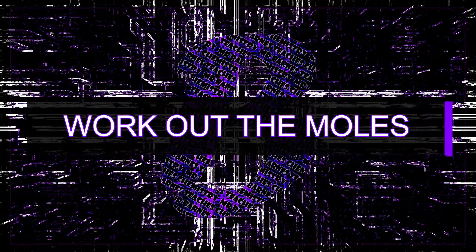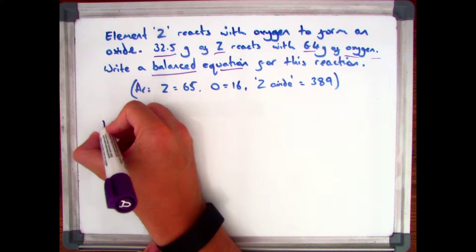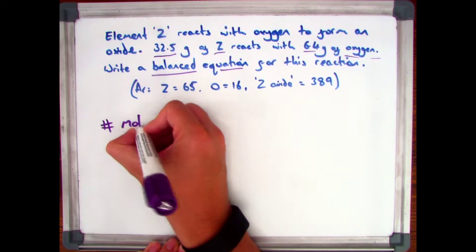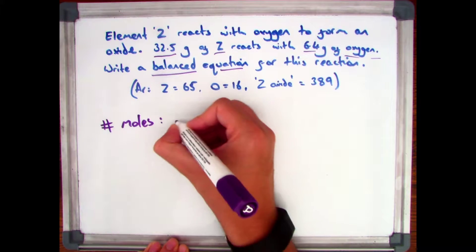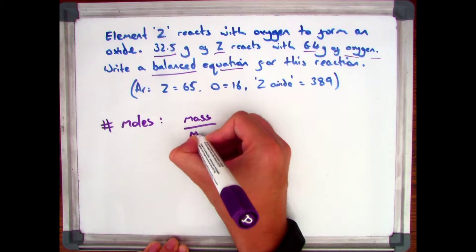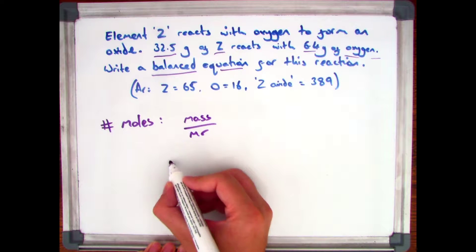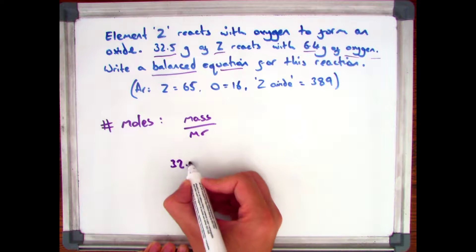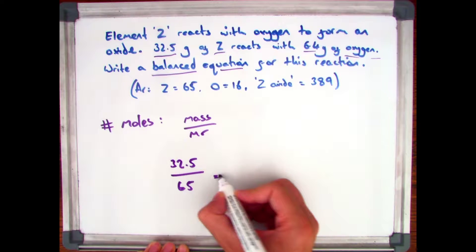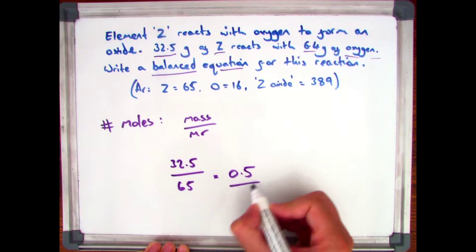Your first step is to work out the moles. To do that you take the mass and divide it by the molecular mass, the formula mass. So for Z, we have a mass of 32.5, divided by the atomic mass of 65, and that comes out to 0.5 moles.